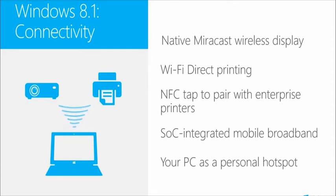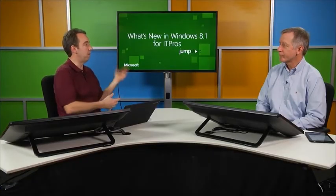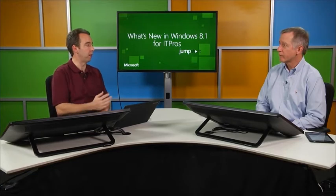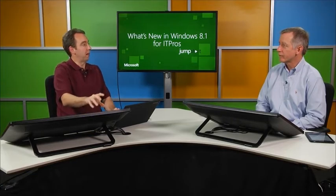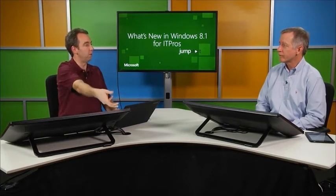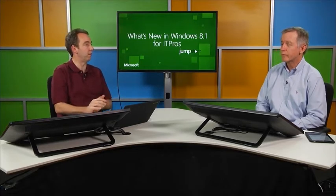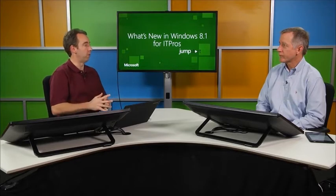So now you can get Miracast-certified devices from a variety of different vendors so that you could use an LCD display or any kind of home theater equipment as a receiver, and project from a Windows device to that. Windows 8.1 added the ability to send to a Miracast device — you just need to have an appropriate receiver. If your TV or monitor doesn't include Miracast support, they make small receivers with an HDMI output that connect via HDMI cable to any TV or LCD display.